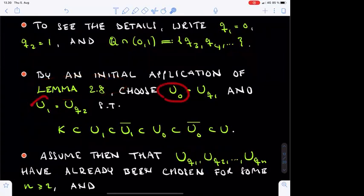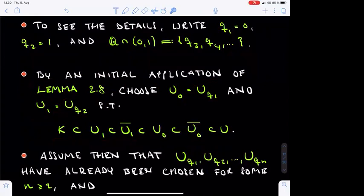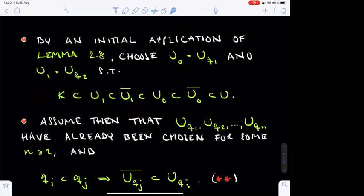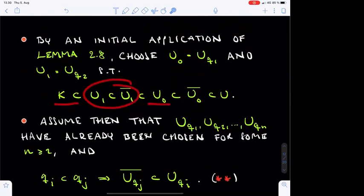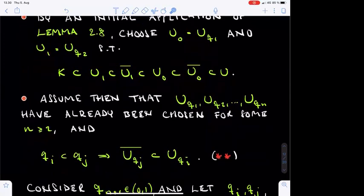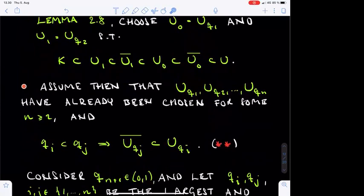We choose sets U_0 and U_1, i.e., U_{Q_1} and U_{Q_2}, such that K is contained in U_1, whose closure is contained in U_0, whose closure is further contained in U. The closures here are compact. This can be easily achieved by first finding U_0 between K and U, and then finding U_1 between K and U_0. It is now clear that both properties star and double star are valid for the two rational numbers 0 and 1.